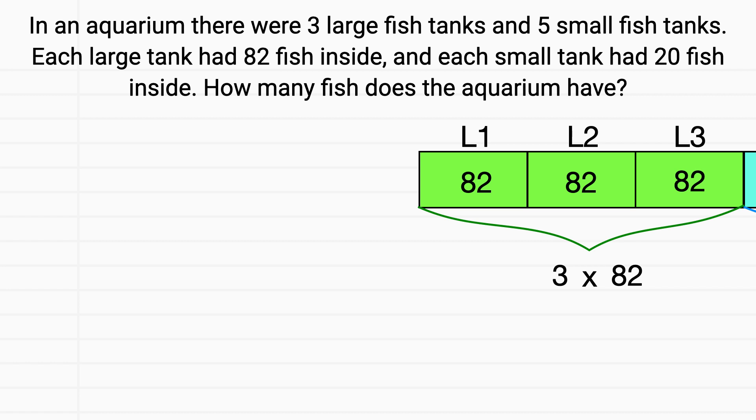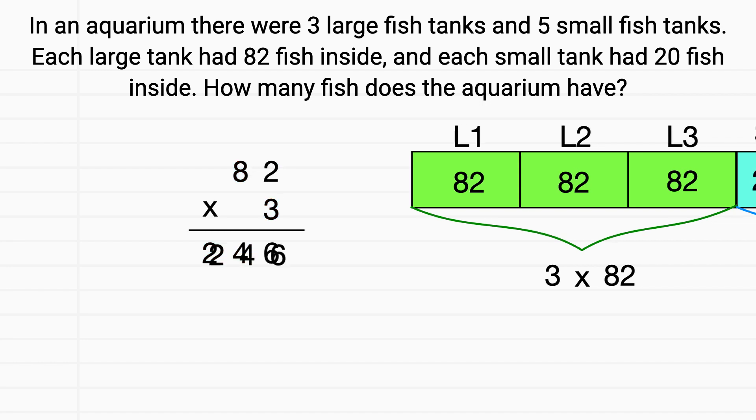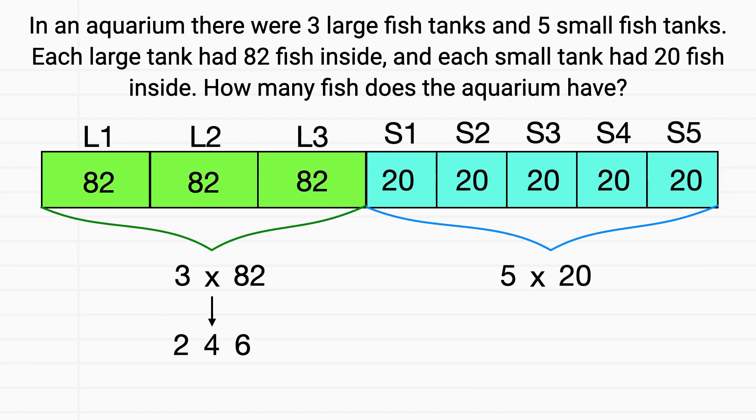Let's focus on our large tanks first. What does 3 times 82 equal? If you solve this out, 3 times 2 is 6, and then 3 times 8 is 24. So the large tanks have 246 fish in them.